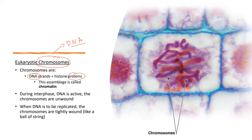These proteins are called histones. So whenever you hear the word chromosomes, they're not really referring just to the DNA, but it's that combination of DNA with proteins — histone proteins. And what they're going to do is help this DNA be folded in a way that it fits in the nucleus.